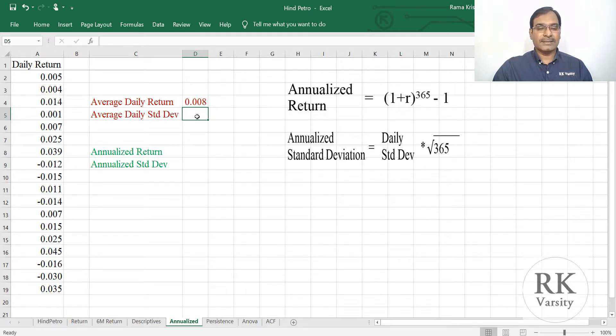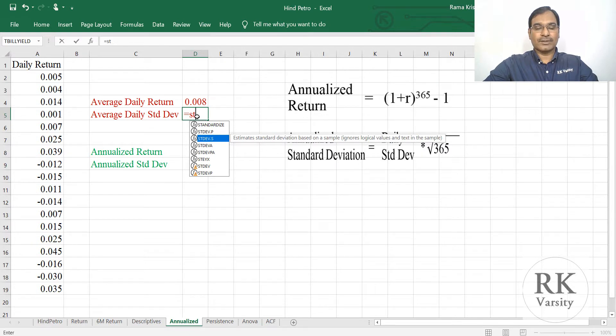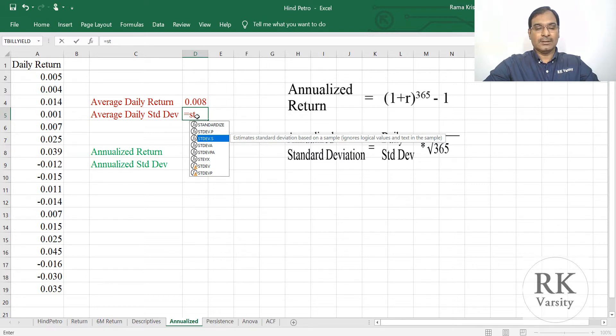Similarly, we will calculate the average daily standard deviation. This equals to STDEV.S as I am using Microsoft Office 2010, I have this option. Earlier versions have only STDEV. Now select this.